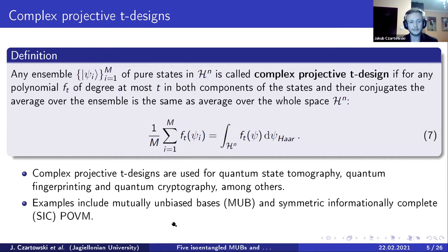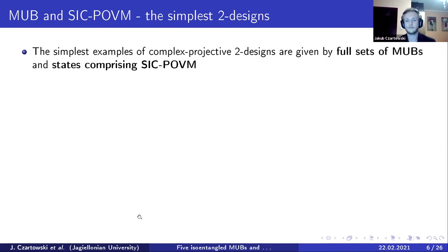And the simplest examples include mutually unbiased bases, which Mate already mentioned, and symmetric informationally complete POVMs, or rather the states that they proceed from. So just to exemplify it more clearly,